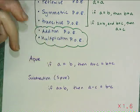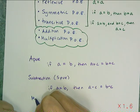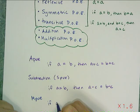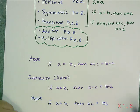And then I have the multiplication property of equality, which we're going to call MPO. So MPO says that if I have if A equals B, then AC equals BC.